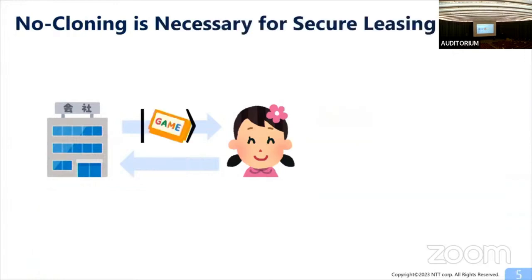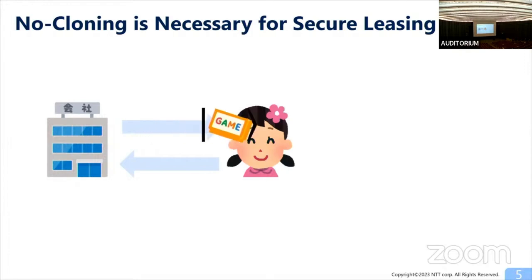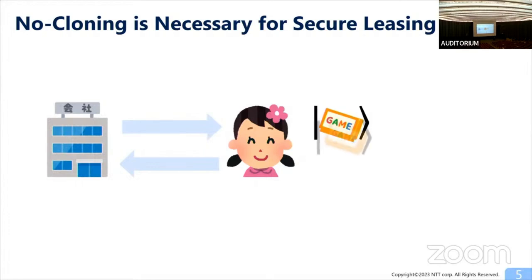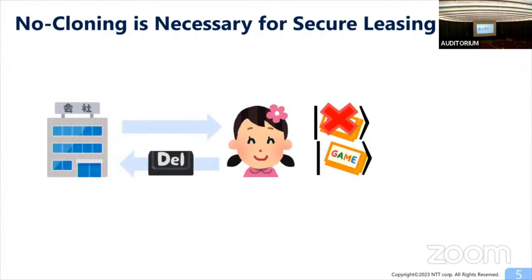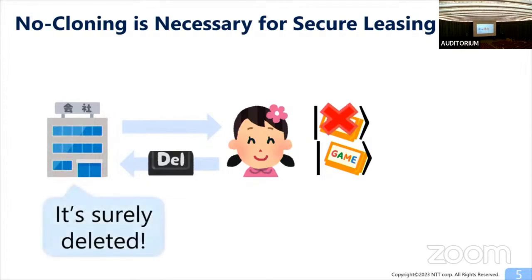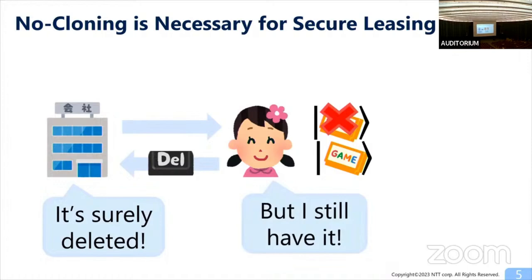For secure leasing, no-cloning is also essential. If the user can clone the same state, secure leasing can be broken as follows: suppose the user downloads the game and can somehow clone the same state. She can use one copy to generate the proof of deletion, convincing the company she deleted the game — but she still has another copy. So for achieving secure leasing, the no-cloning property is essential.